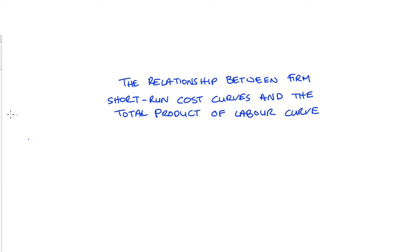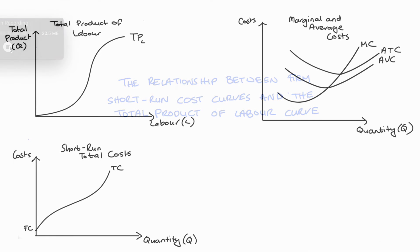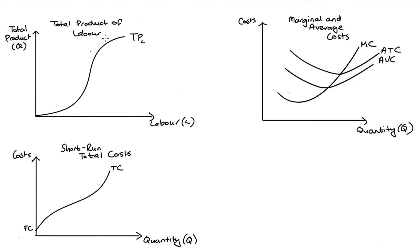In this video I'm going to look at the relationship between the firm's short-run cost curves and the total product of labor curve. The task is to link these three diagrams: the total product of labor curve (TPL) in the top left, the short-run total cost curve (TC) below it, and the marginal and average cost curves — MC, ATC, and AVC — on the right. All of these curves apply to the short run.